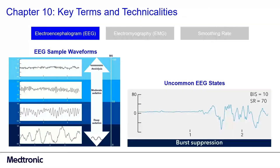Occasionally, an uncommon EEG state called burst suppression will occur. Burst suppression refers to bursts of EEG activity alternating with isoelectric, flat, or suppressed EEG, indicating very deep sedation, hypothermia, or ischemia.